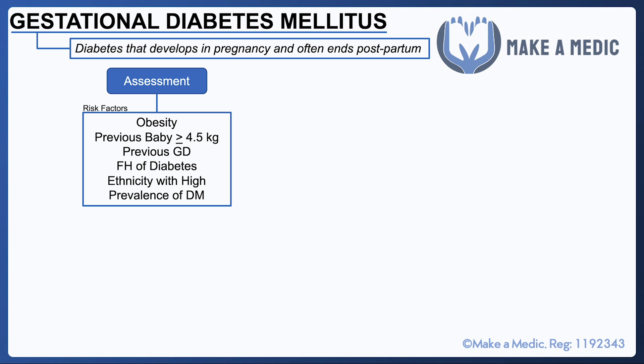But regarding GDM specifically, having previously had a macrosomic baby with a birth weight of more than 4.5 kilos, or previously having gestational diabetes, are both big risk factors.